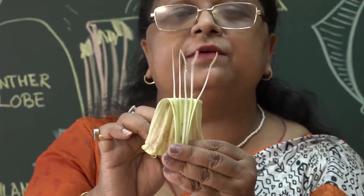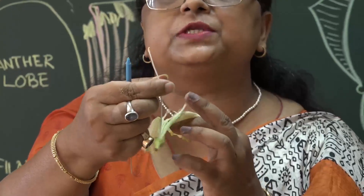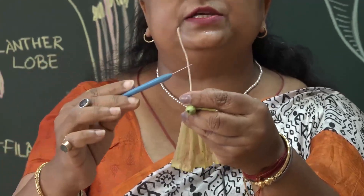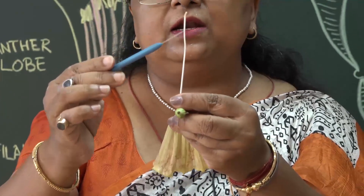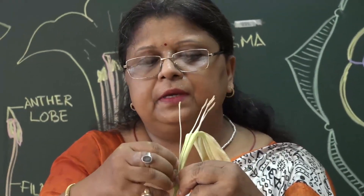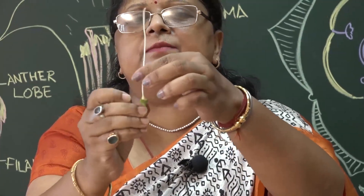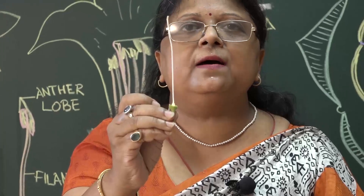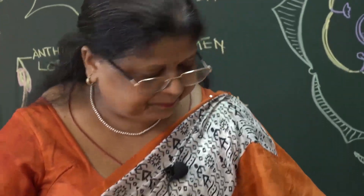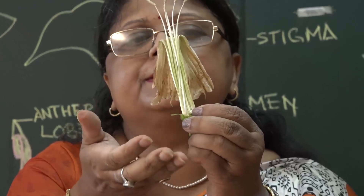There are 5 anthers, all fixed near the base, and one part protrudes out — this is the gynoecium, showing the stigma and a long style which ends up into a swollen ovary. At the base there is an ovary. This is the innermost part of the flower where you can see a pistil. The ovary is hypogynous, meaning the position of the ovary is above all the other whorls.